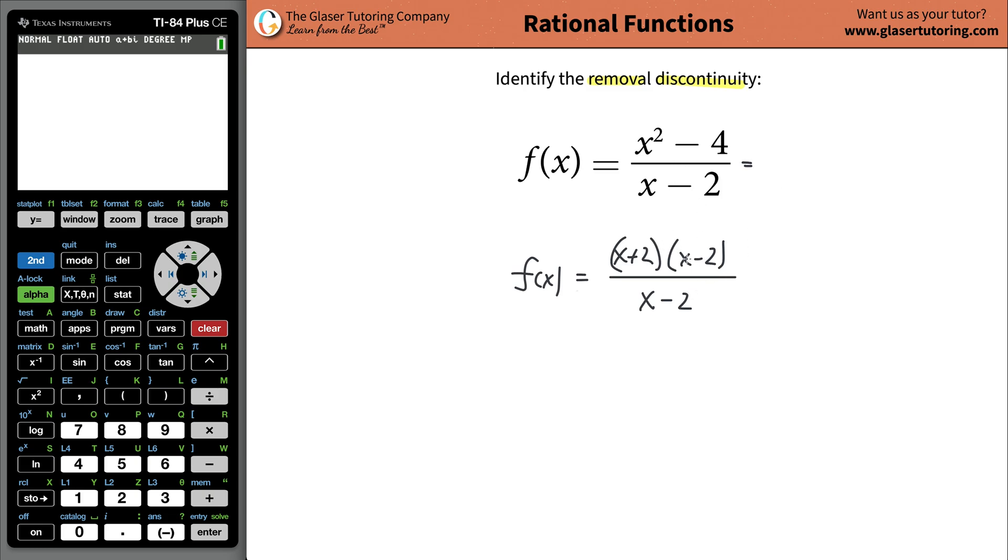So what I'm going to do is I realize that I have a potential discontinuity here at x is equal to 2. But notice how I have this factor and this factor, and they both would cancel. So if I cancel that, then I'm just left with this, that this is equal to x plus 2.